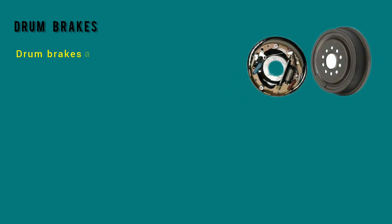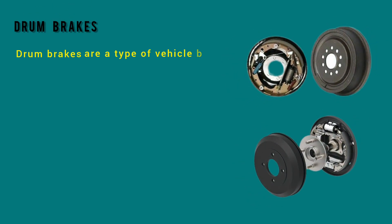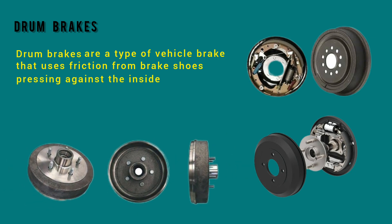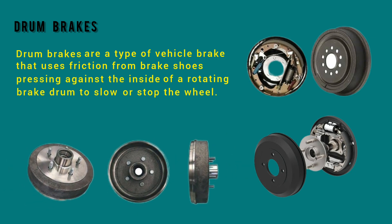Types of Brakes. Drum Brakes are a type of vehicle brake that uses friction from brake shoes pressing against the inside of a rotating brake drum to slow or stop the wheel.